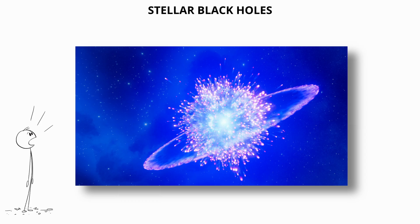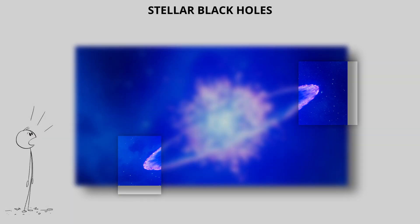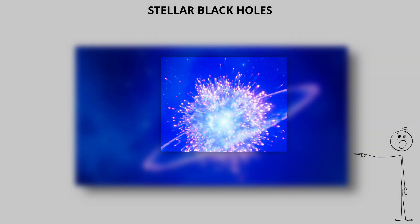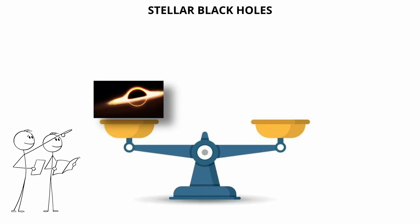During this explosion, the outer layers of the star are ejected into space while the core collapses inward under the force of gravity. If the remaining mass of the core is between approximately 2.5 and 3 solar masses, it collapses into a black hole.